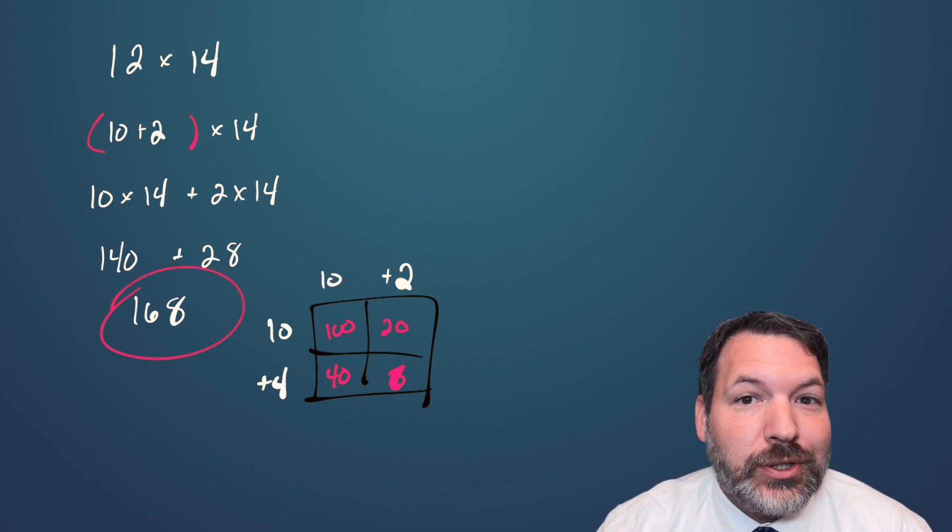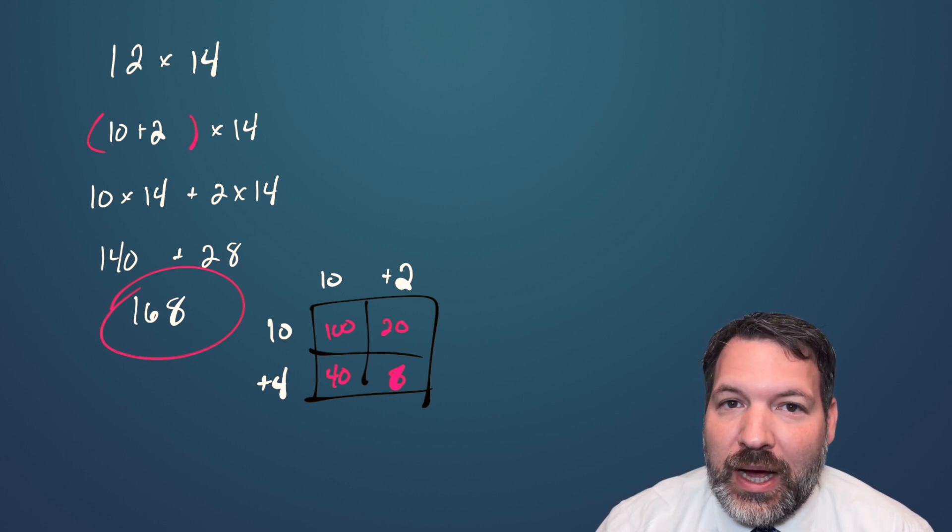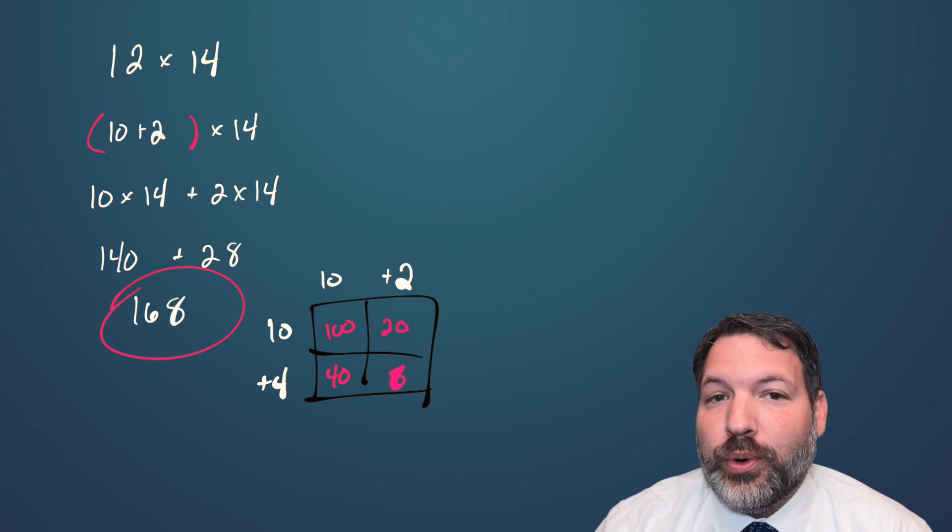You can tell that the area model actually is the same as the line method, but rather than count up some number of dots in an array, we're just actually multiplying out the numbers.